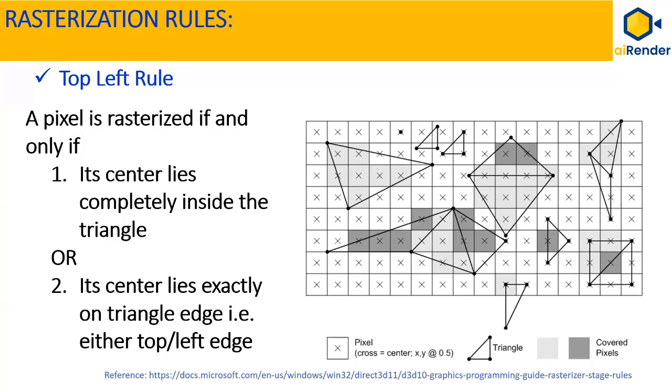In order to achieve these requirements, certain rasterization rules are established. One set of such rules is top-left rule. It states that a pixel is rasterized if and only if its center lies completely inside the triangle, or its center lies exactly on the triangle edge, that's either top or left edge. In case of corners, the pixel center lies exactly on the multiple edges, that's top or left edges.